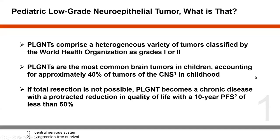What is PLGNT? PLGNTs comprise a heterogeneous variety of tumors classified by the World Health Organization as grades 1 or 2. PLGNTs are the most common brain tumors in children, accounting for approximately 40% of tumors of the CNS in childhood. And if total resection is not possible, PLGNT becomes a chronic disease with a protracted reduction in quality of life, with a 10-year progression-free survival rate of less than 50%.